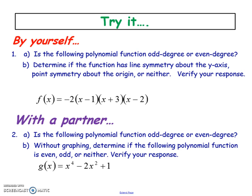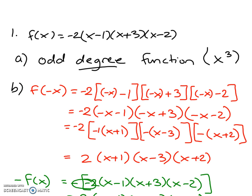Here's an example. Our f(x) has a negative leading coefficient in front of x³, so it's an odd degree function — a negative x³ graph. The second question asks us to look at symmetry, so I want to compare and see if it has even symmetry or odd symmetry — and it might be neither.